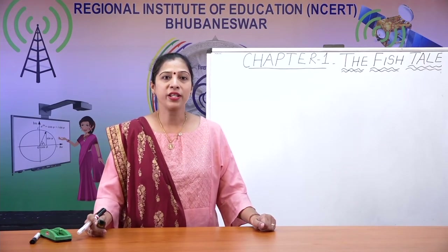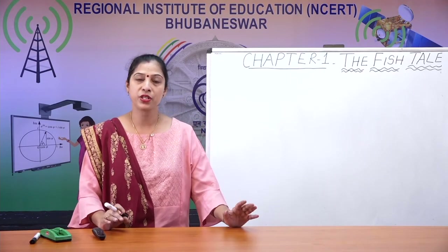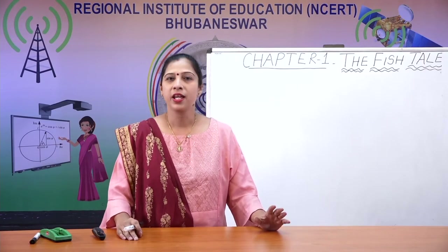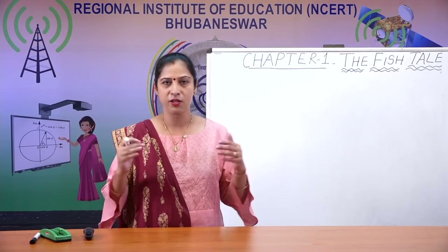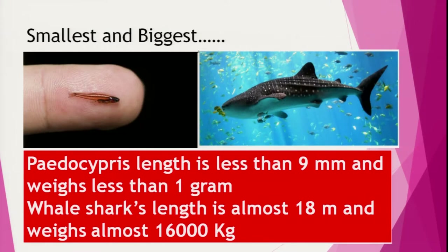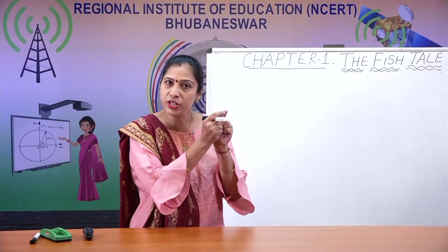Now let's talk about the smallest and the biggest fish. The smallest fish is called pedocypris. Its length is less than one centimeter, just near to nine millimeters. Can you imagine? You can see in the picture how small it is — it is so small that it can just fit onto the tip of your finger.